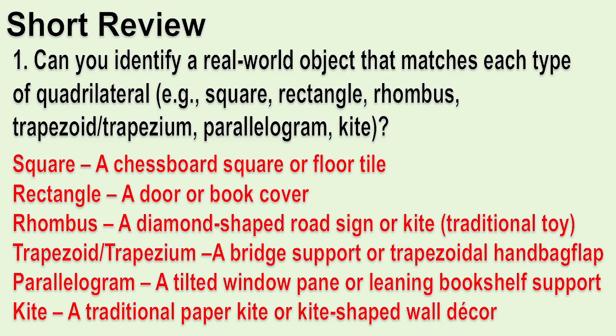Square: a chessboard square or floor tile. Rectangle: a door or book cover. Rhombus: a diamond-shaped road sign or kite. Trapezoid or Trapezium: a bridge support or trapezoidal handbag flap. Parallelogram: a tilted window pane or leaning bookshelf support. Kite: a traditional paper kite or kite-shaped decal.